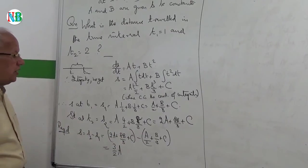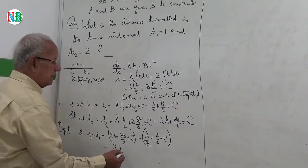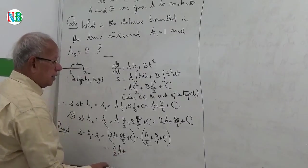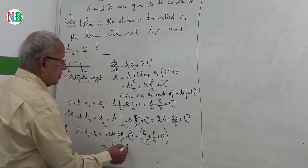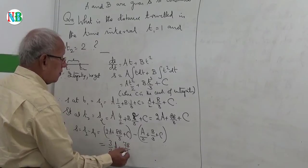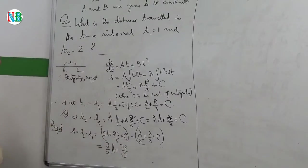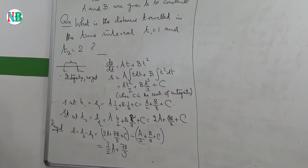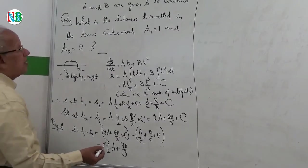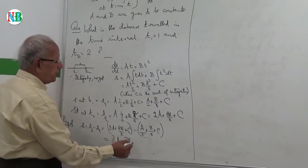And 8 over 3 minus 1 over 3 is 7 by 3. And that c and c will get cancelled. So this is your answer. It depends on the units, meters or whatever it is given.